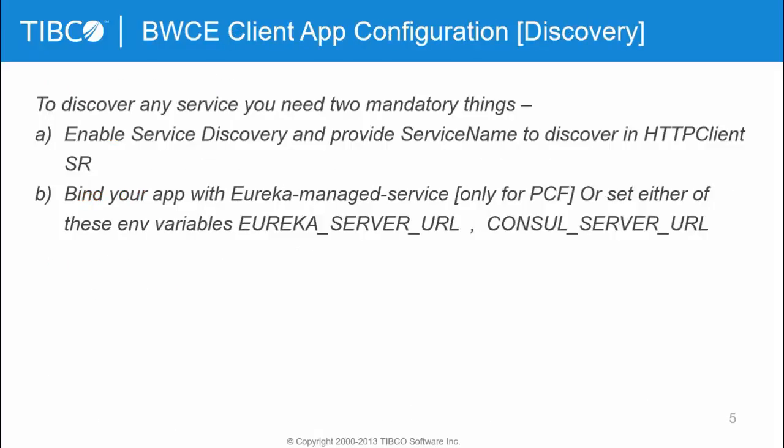For the client app configuration — which is your discovery — you need to enable the service discovery flag in your HTTP client shared resource, and provide the service name you want to discover. Then you just need to bind your application with the Eureka managed service when pushing to Cloud Foundry, or provide the Eureka server URL or Consul server URL as an environment variable.